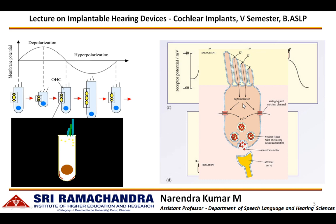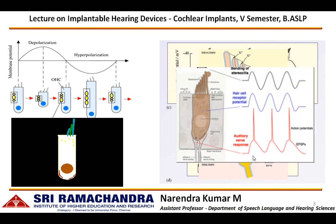When calcium ions enter into the cell, they release neurotransmitters. These neurotransmitters are responsible for creating action potentials at the auditory nerve fiber. So, depending upon the incoming sound wave, the stereocilia get deflected and the cell membrane potential gets varied. When the cell membrane potential reaches a particular level, it creates an action potential.